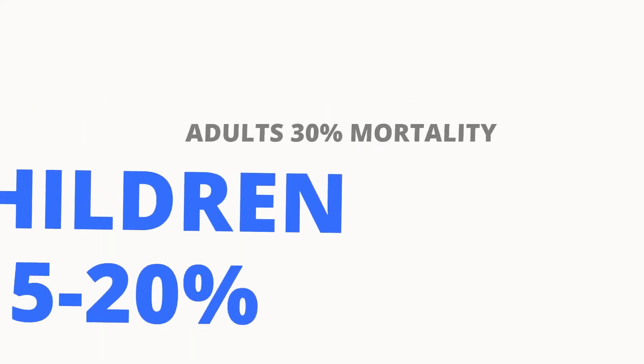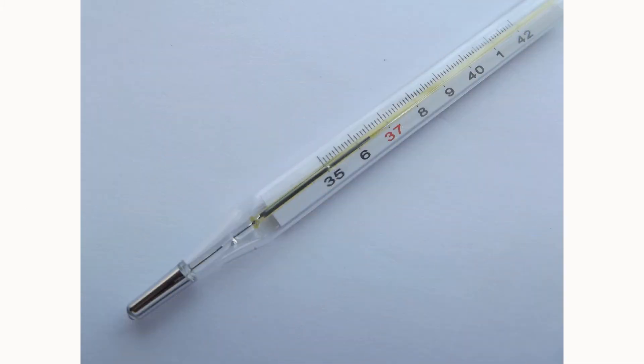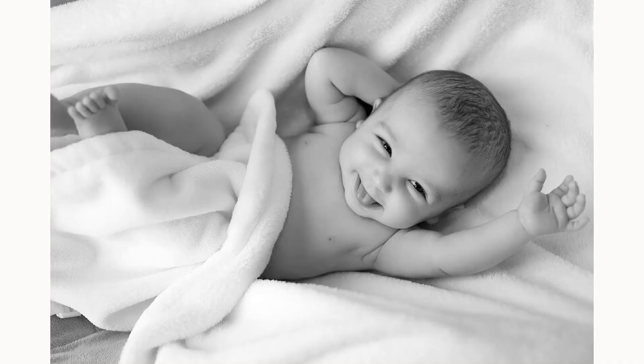The mortality rate in children is lower than that of adults. Adult mortality rates are approximately 30%, whereas in children it's about 5 to 20%. It's important to mention that a raised temperature is not a key indicator in children for sepsis.